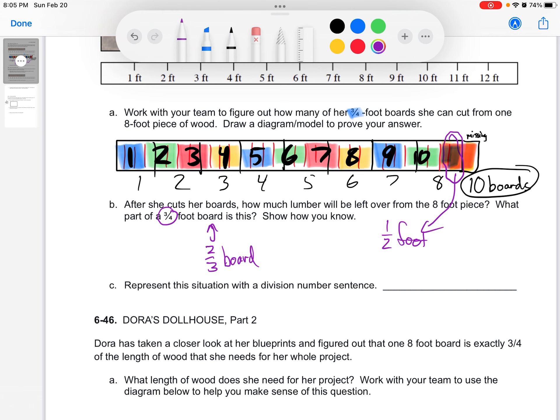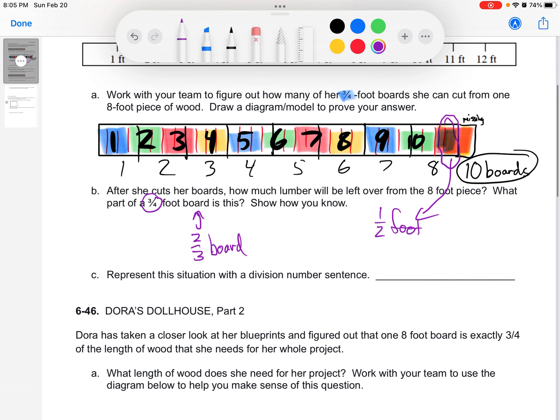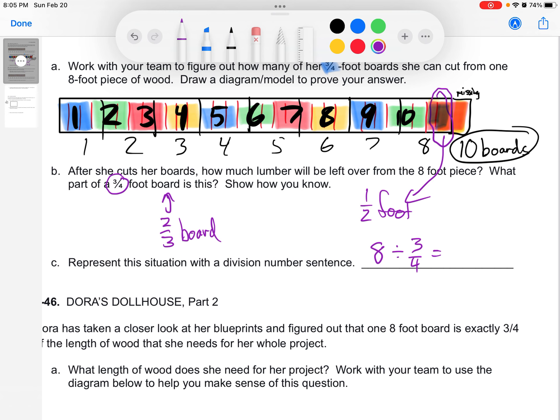So we're going to represent this with a division number sentence. We had an eight-foot board that we divided into three-quarter foot pieces. What did we get? We got ten boards with not a half a foot left over, but two-thirds of a board left. So boards. That's what I'm going to say that were pieces that we needed for that.